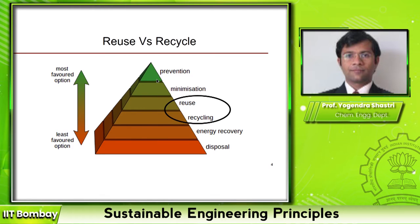If you cannot eliminate waste, minimizing it is the next best option. After that comes reuse; if you cannot reuse, then recycle; if you cannot recycle, look for energy recovery, and finally disposal. This sequence is how you prioritize handling waste. This sixth principle is specifically related to the concept of reuse versus recycle.